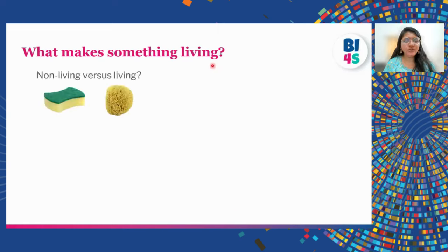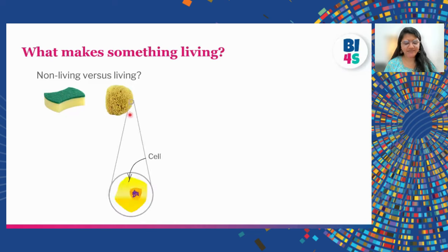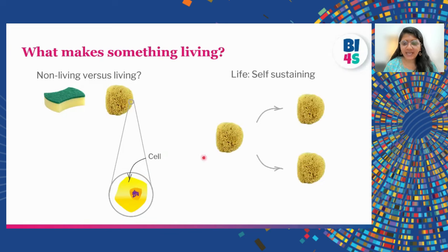You would have seen this — this is a sponge, and this is also a sponge which lives in the ocean. So what makes this non-living versus this living? The simple answer is: if we zoom into this, it will be made of many tiny cells, and something that is living can also make many copies of itself while it is alive.